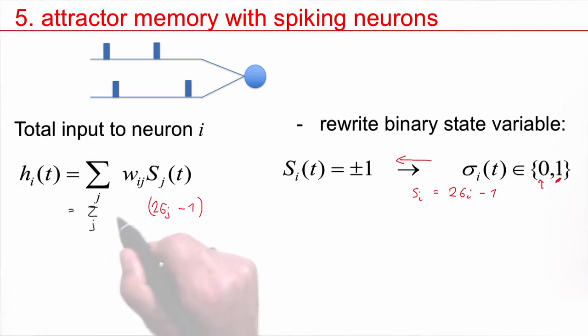Let's plug this in. I replace the S_j by 2 sigma_j minus one. So I have sum over j, w_ij, 2 sigma_j minus one. I can split this up: sum over j, w_ij tilde, sigma_j minus some constant c_i. What is this w_ij tilde? This is just 2 w_ij. What is this neuron-specific constant c_i? c_i is sum over j, w_ij.